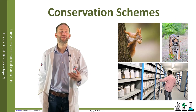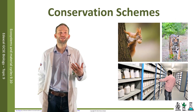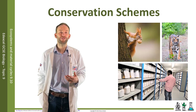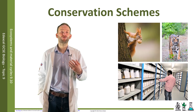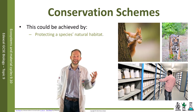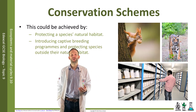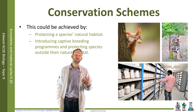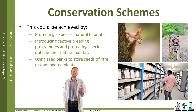The other thing we're going to look at is conservation schemes. There are loads of different types of conservation schemes done to try and improve biodiversity. Conservation is when you make an effort to protect a rare or endangered species. It could be achieved by protecting their natural habitat, by introducing captive breeding programs, protecting species outside of the natural habitat perhaps in zoos or centres, or using seed banks to store seeds of rare or endangered plants.